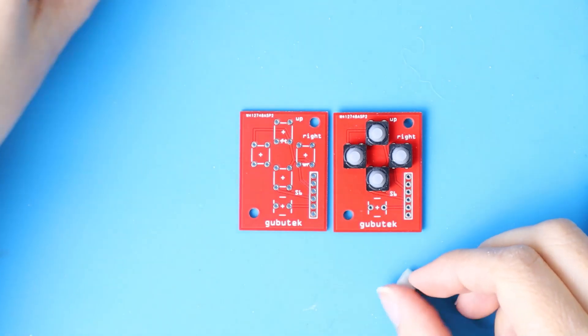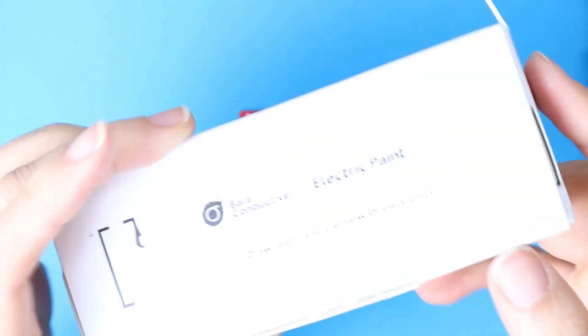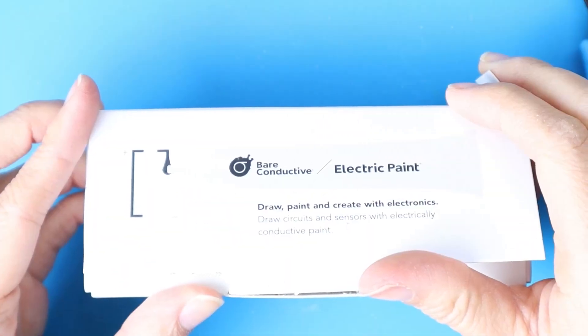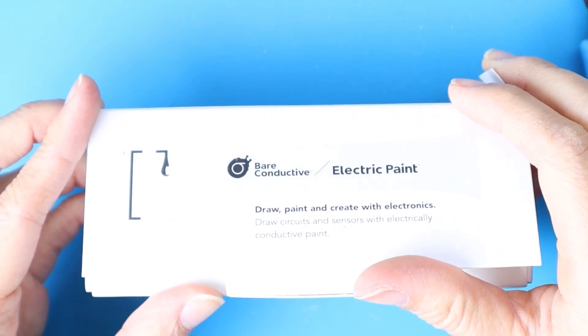So I will try to fix it with conductive paint. This is from the brand Bare Conductive, dynamic electric paint. Let's have a look at this.